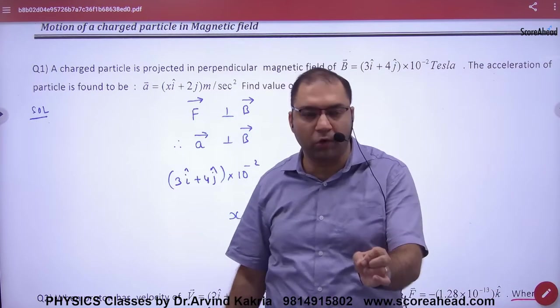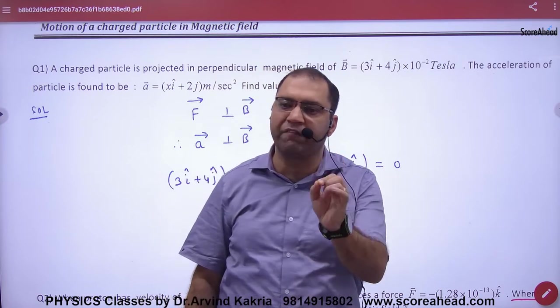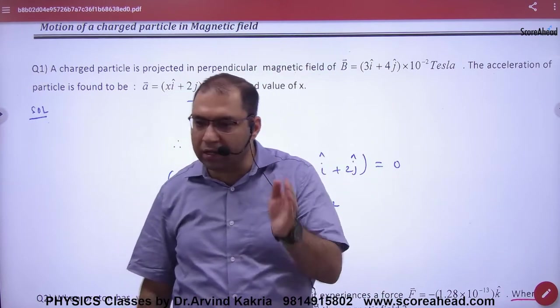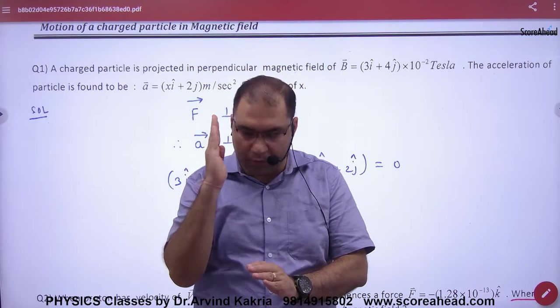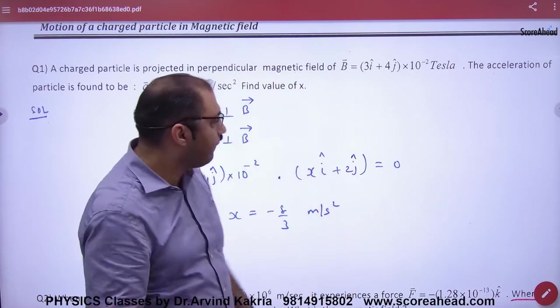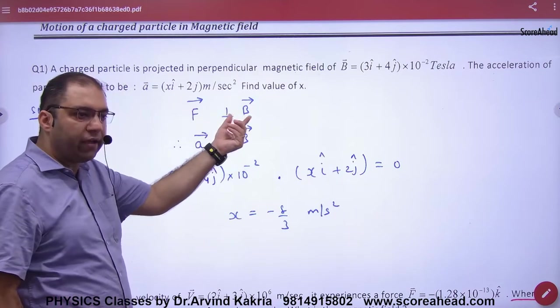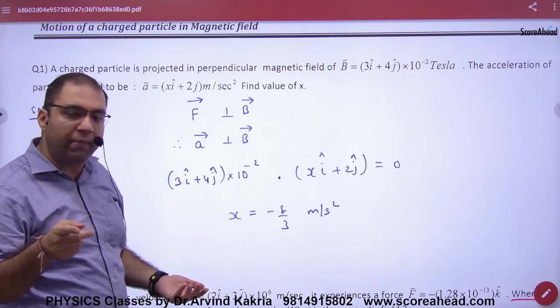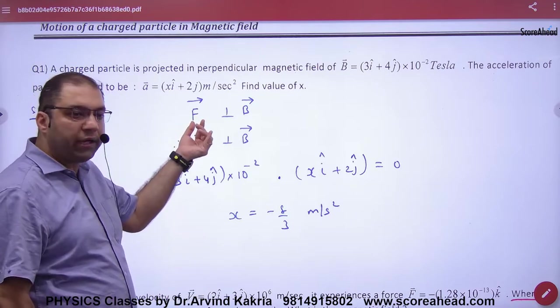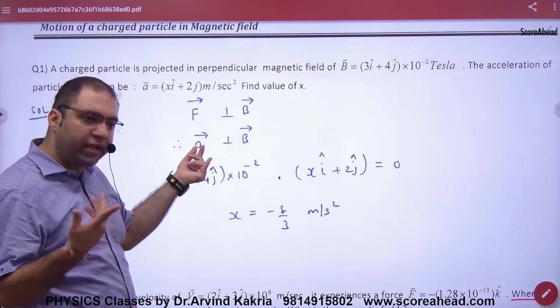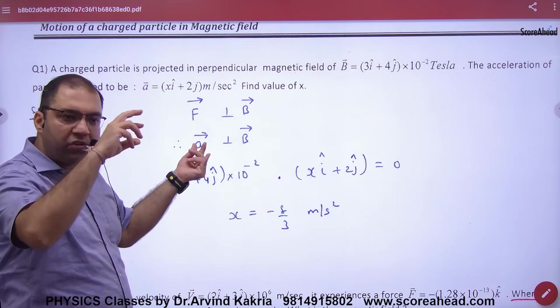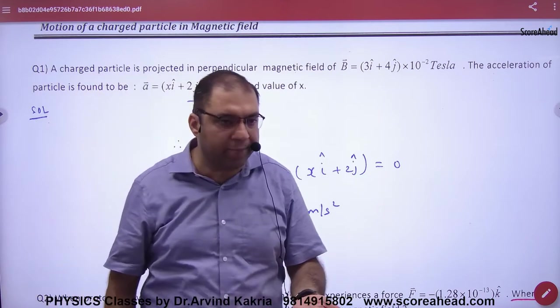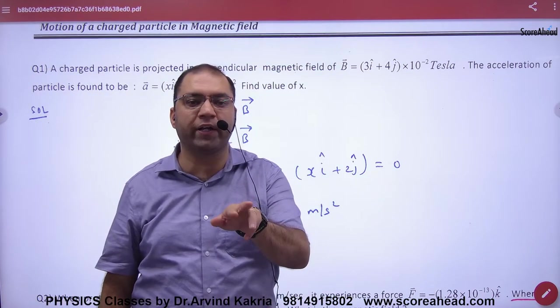First rule: when a particle moves in a perpendicular magnetic field, it will move in a circle. In a circle, magnetic force and the magnetic field will be 90 degrees. The direction of force and acceleration is one thing. So if the angle of acceleration and magnetic field is 90, then what will be the dot product of the two vectors? Zero.